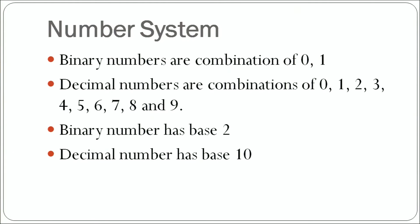Then we have decimal numbers. Decimal numbers are the combinations of digits from 0 to 9 — 0, 1, 2, 3, 4, 5, 6, 7, 8, 9. These 10 numbers collectively form the group of decimal numbers and the different combinations define the different values of numbers.